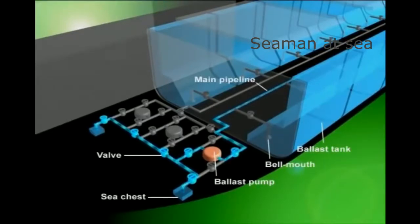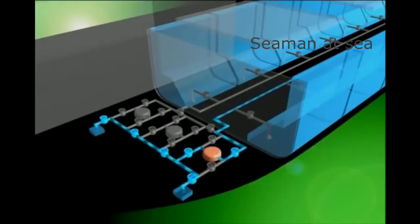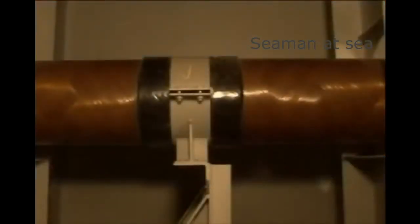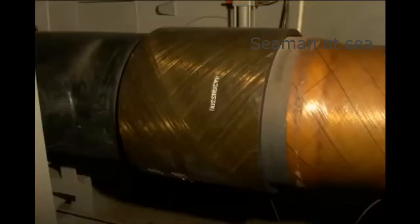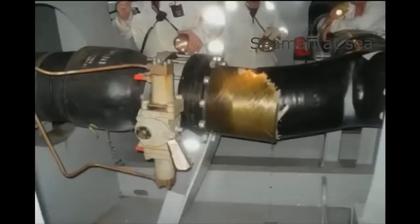Please note that improper handling of pumps and/or valves may result in various accidents. Shown here is a pipeline laid on the ship's bottom through which seawater flows for ballast filling or discharging. Joints that connect the pipes are called dressers. There are cases where dressers are damaged. This is an example of a water leakage accident due to dresser breakage caused by abrupt valve operation.